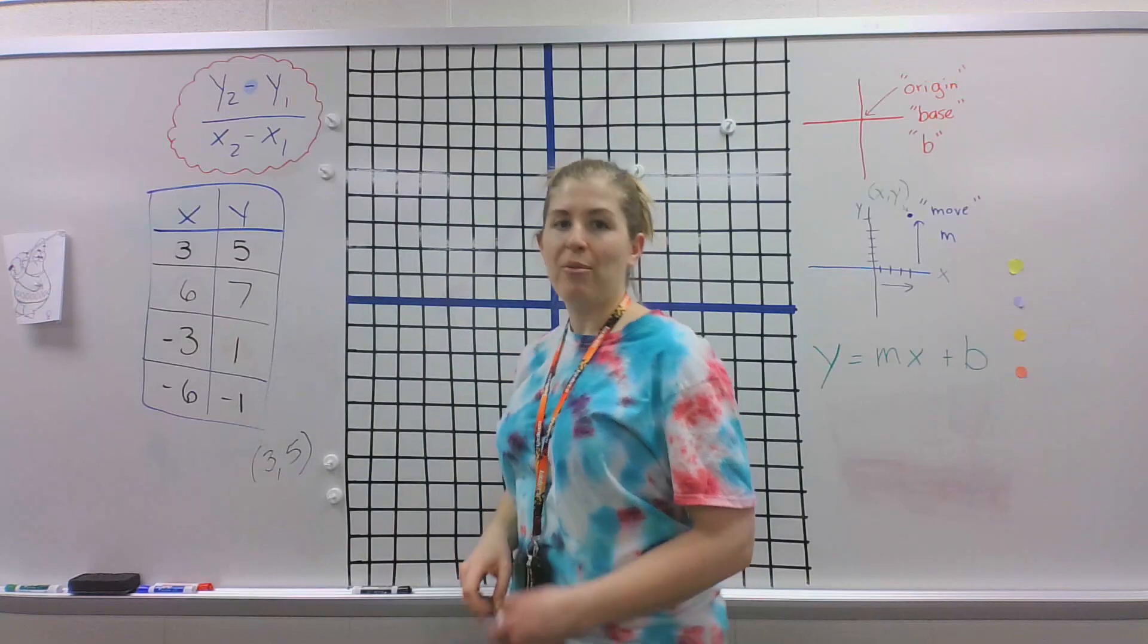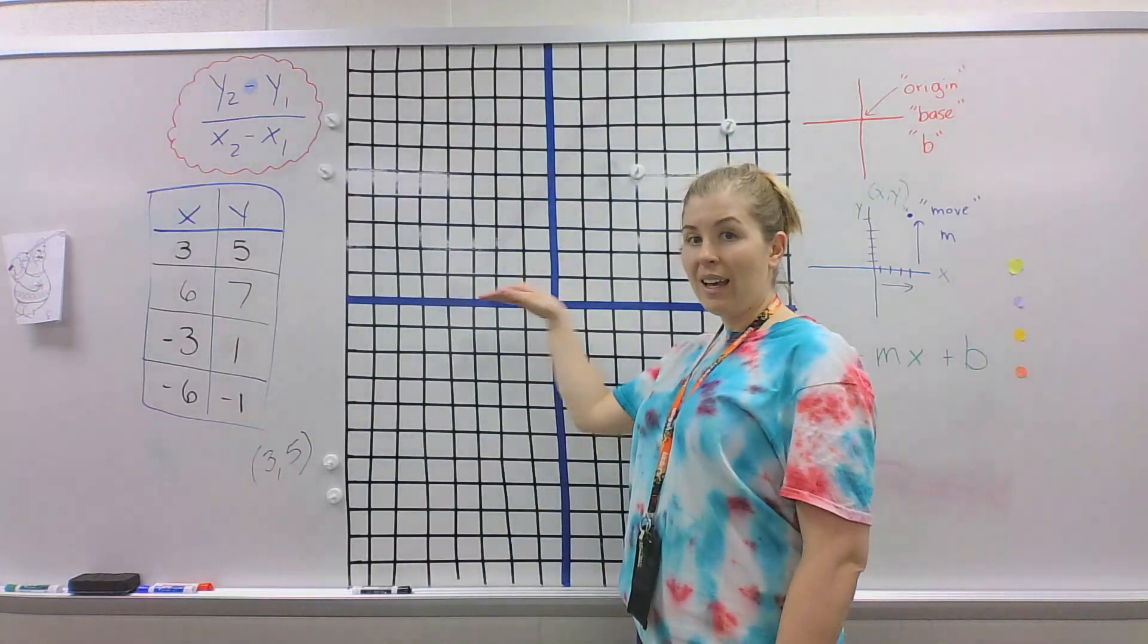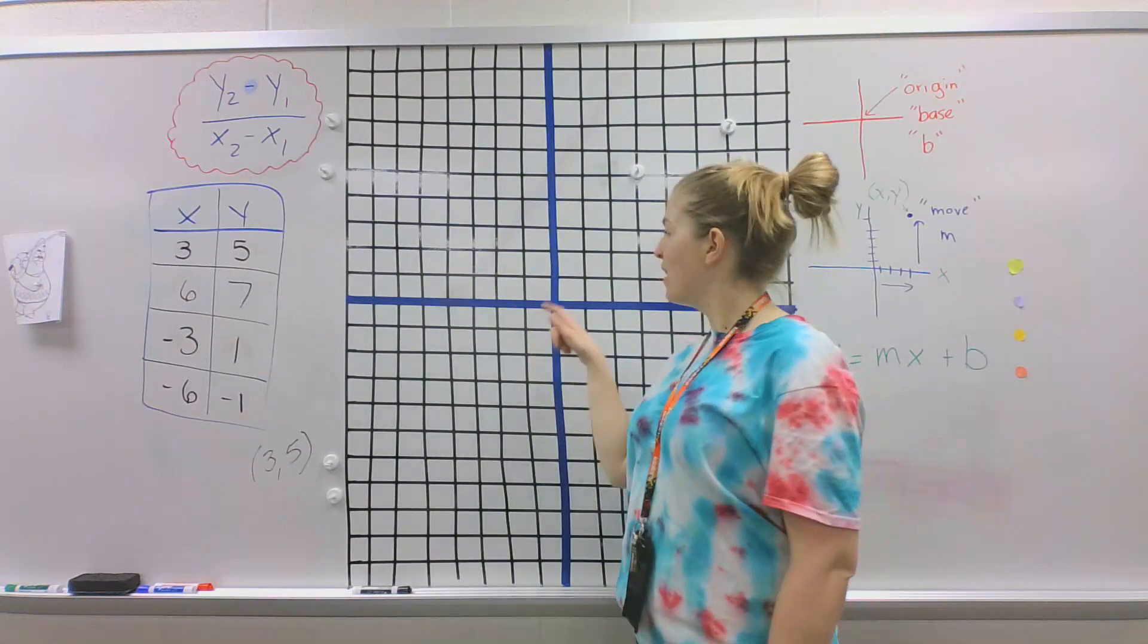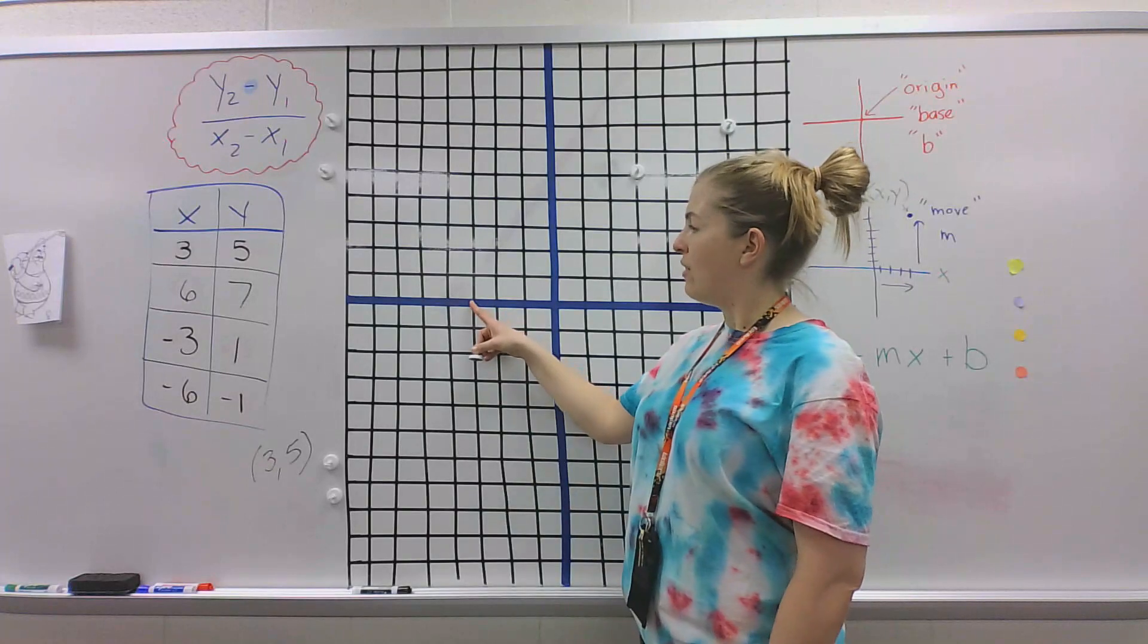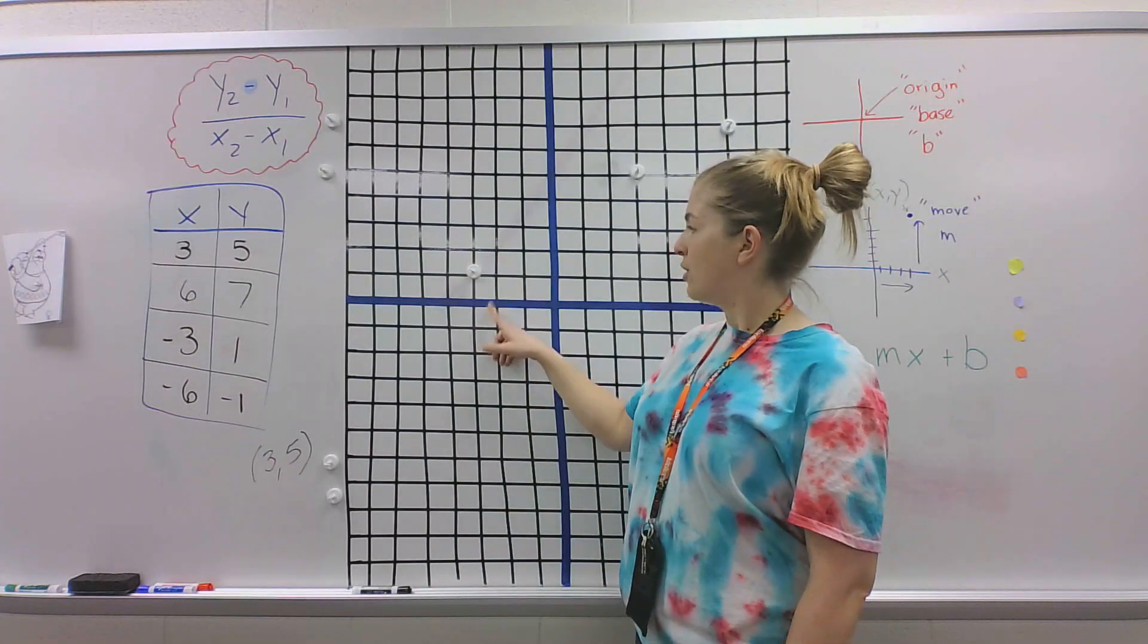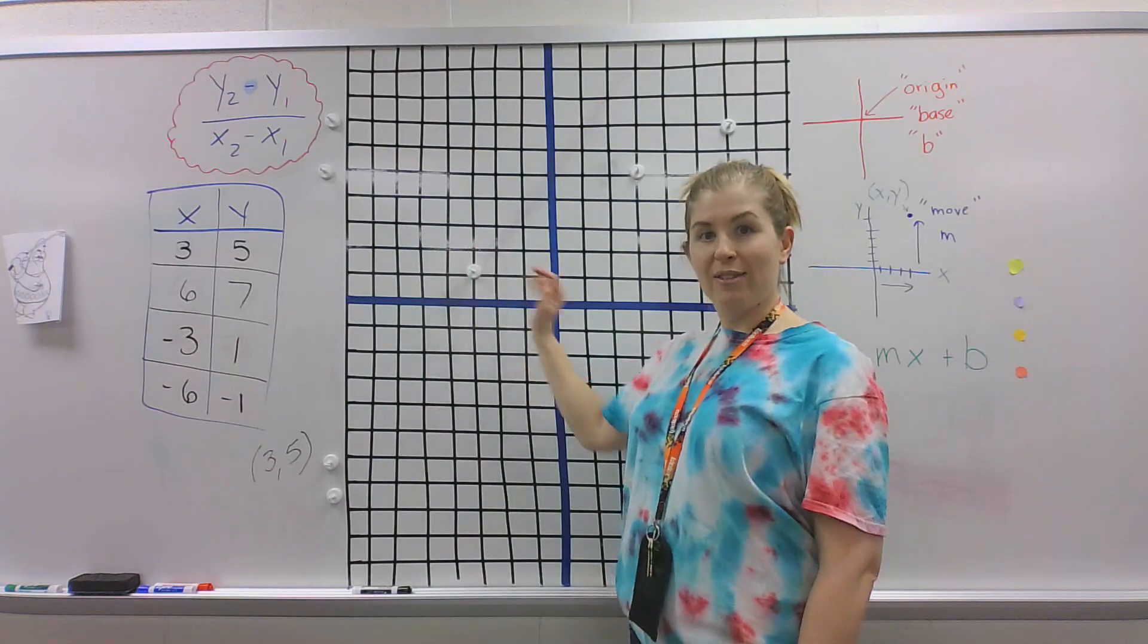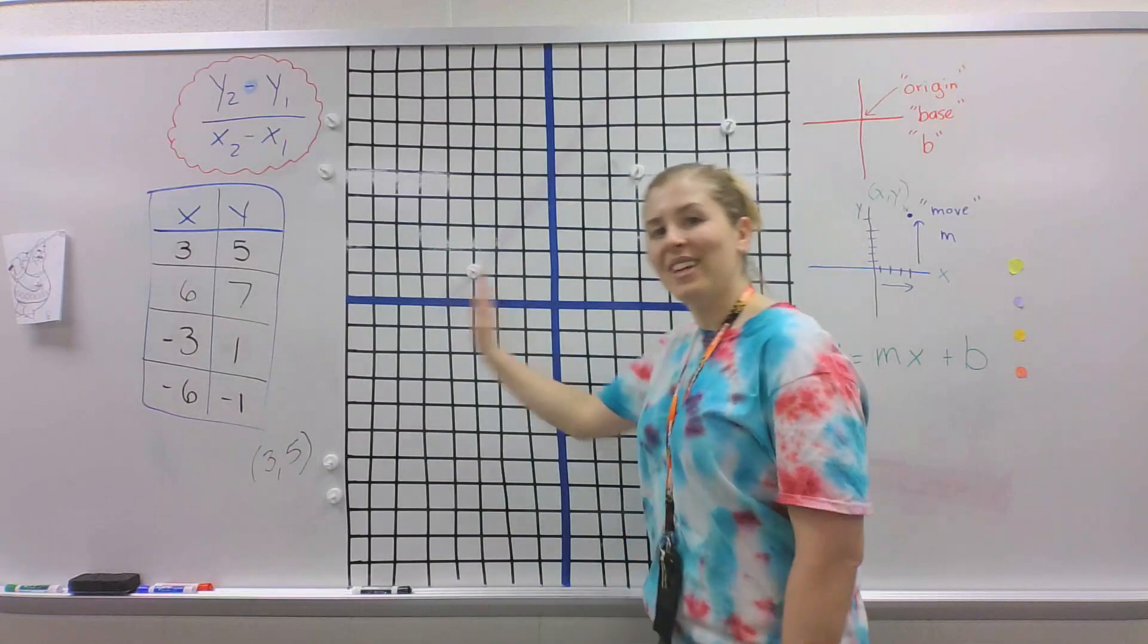Now we have negative 3 comma 1. So again, we're starting at 0. But this time, we're going negative, in the negative direction. So negative 1, negative 2, negative 3. And then we're going to go positive 1 up. So negative and a positive. Right? Positive, negative, positive, negative.